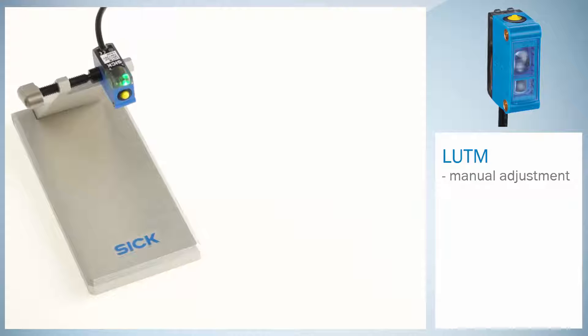We will show how the sensor is adjusted manually. In order to teach in a certain luminescence, mount the sensor at a distance of 12.5 mm from the object.